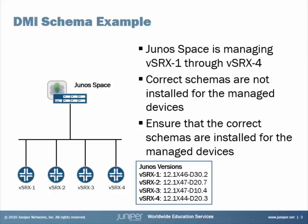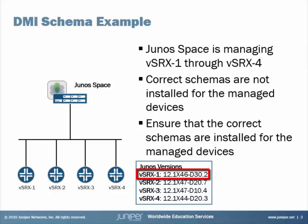I'm going to take this a step further. We will not download a schema for one of the devices. The box here shows the devices and which version of Junos they're running — you can see they're all different. We'll take vSRX 1 and show how to use the default schema with that, as if it were a new version of code and the schema wasn't available. I'll show you how to configure the default schema to something close to 12.1x46d30.2. So vSRX 1 will use the default schema.